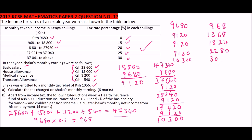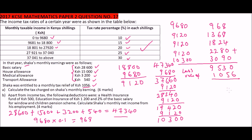Thirty percent of ten thousand three hundred shillings equals three thousand and ninety shillings. We now total all the bracket taxes: nine hundred and sixty-eight, plus one thousand three hundred and sixty-eight, plus one thousand eight hundred and twenty-four, plus two thousand two hundred and eighty, plus three thousand and ninety equals nine thousand five hundred and thirty shillings. Subtracting the relief of one thousand and fifty-six shillings, Shaka's tax payable is eight thousand four hundred and seventy-four shillings. That is the answer to part (a).